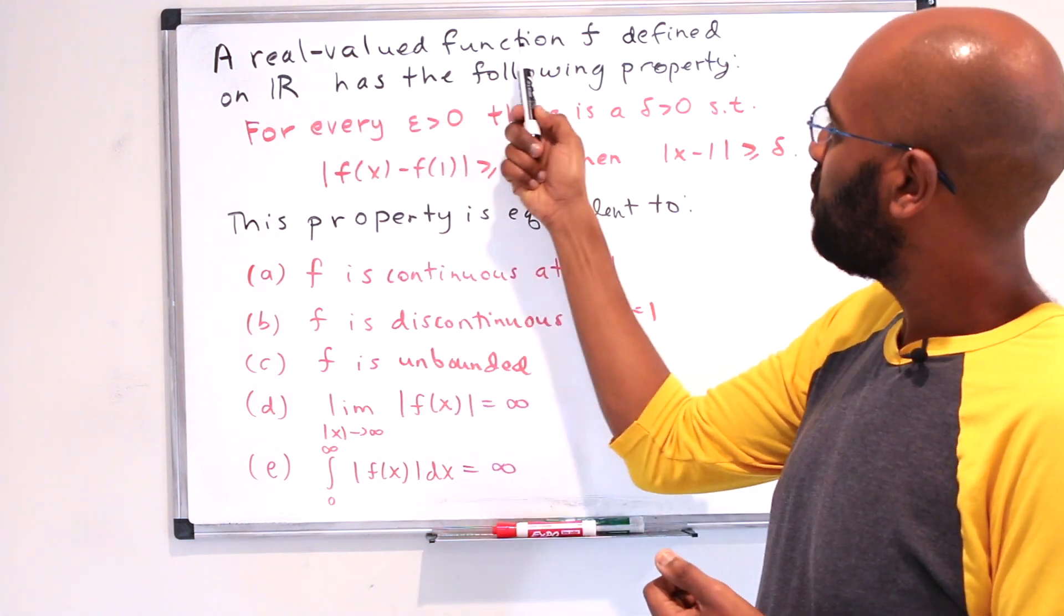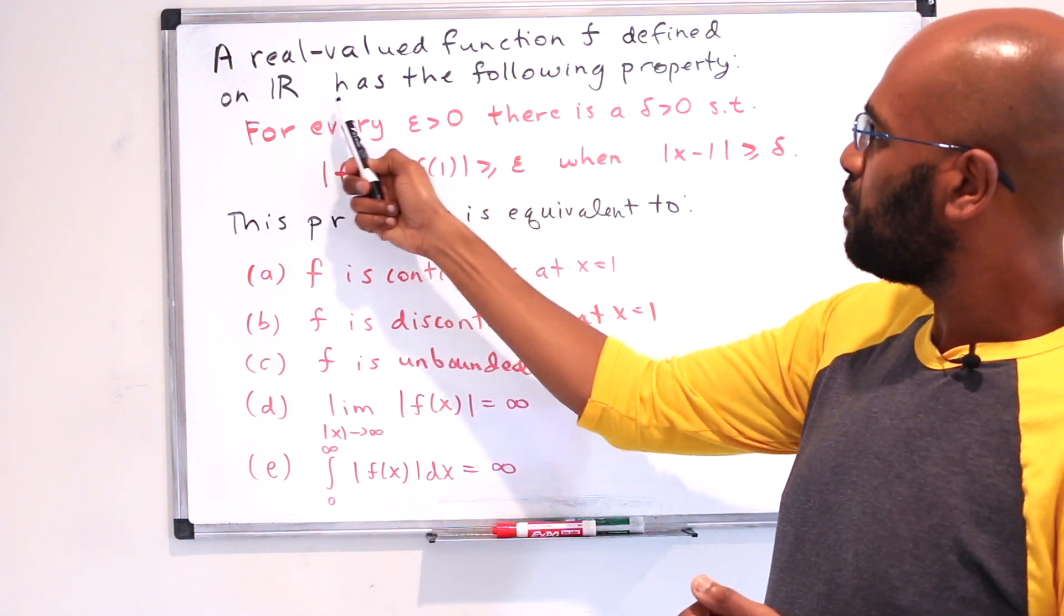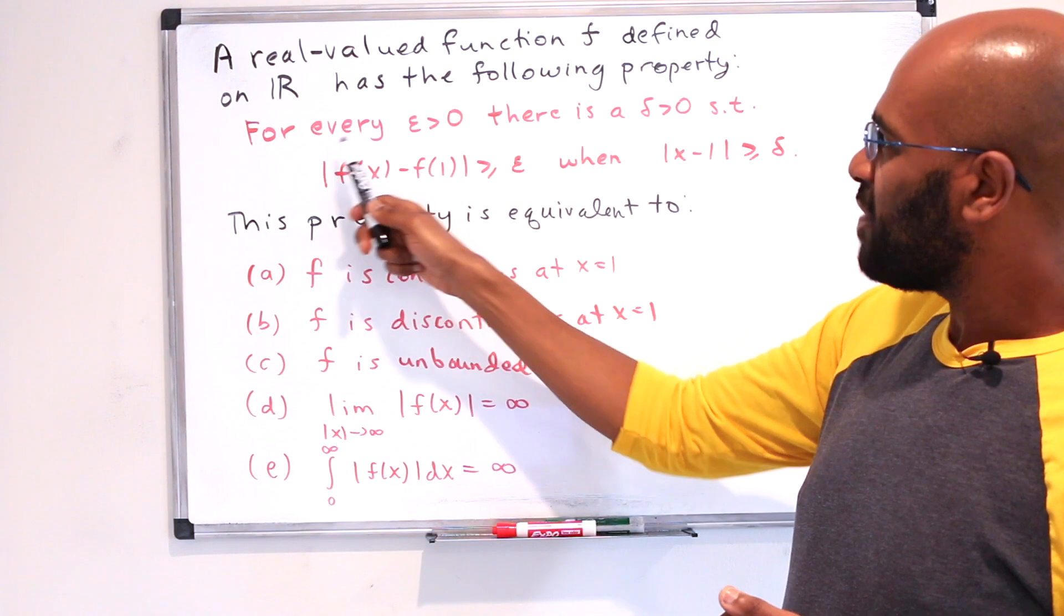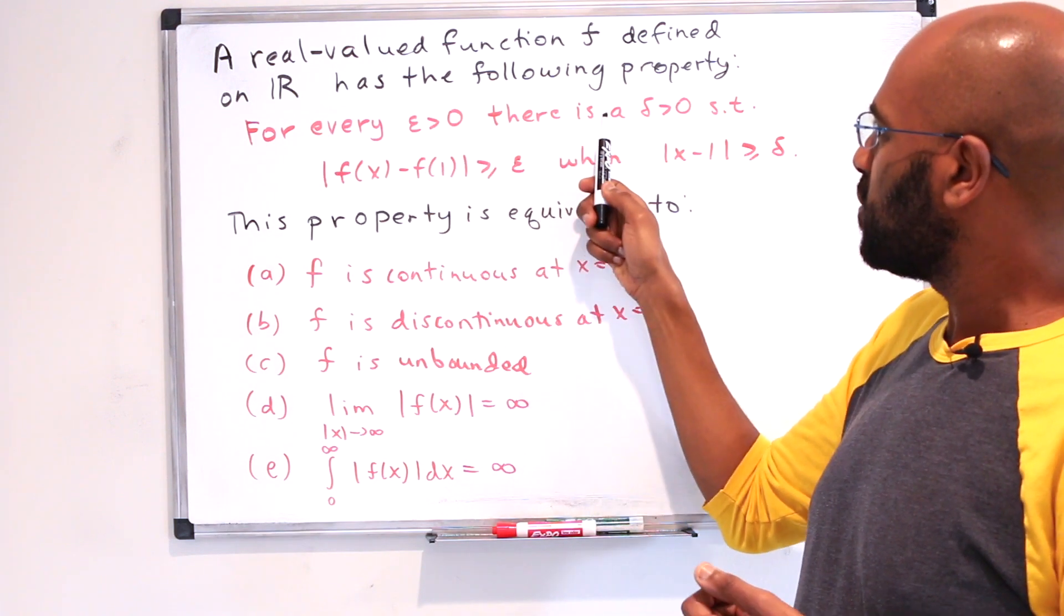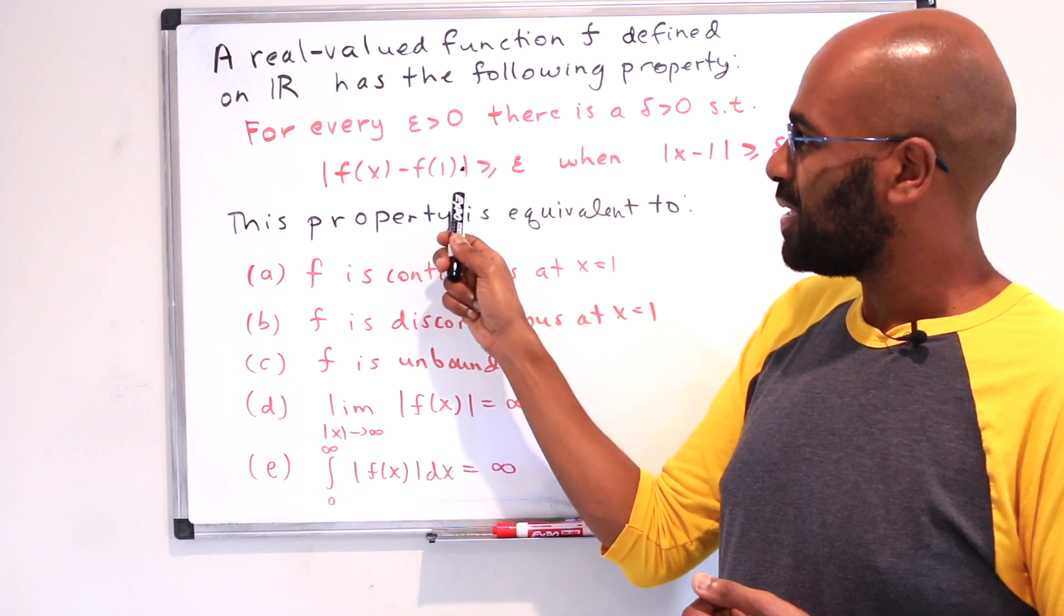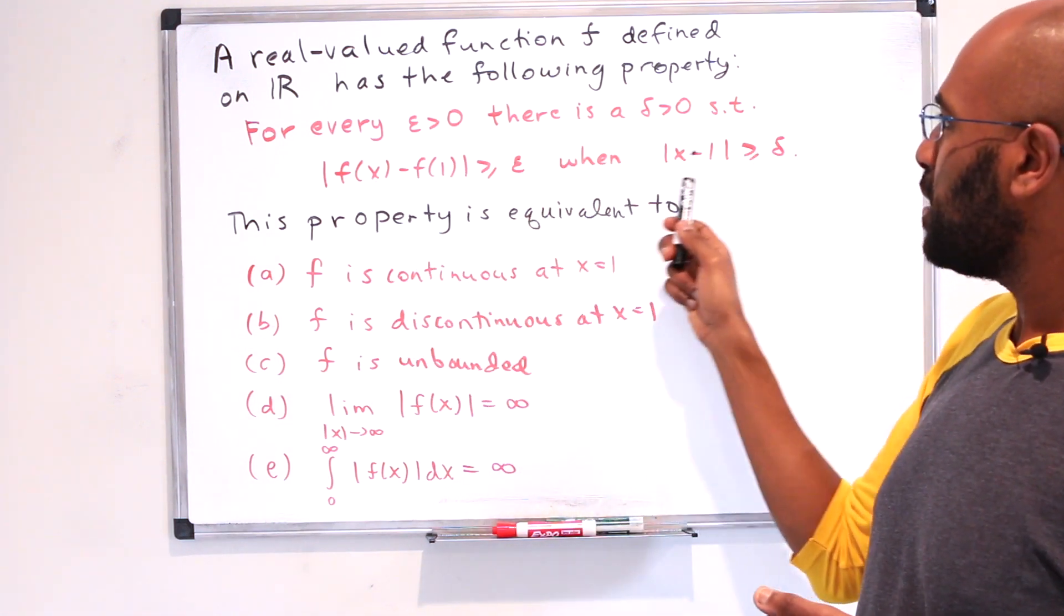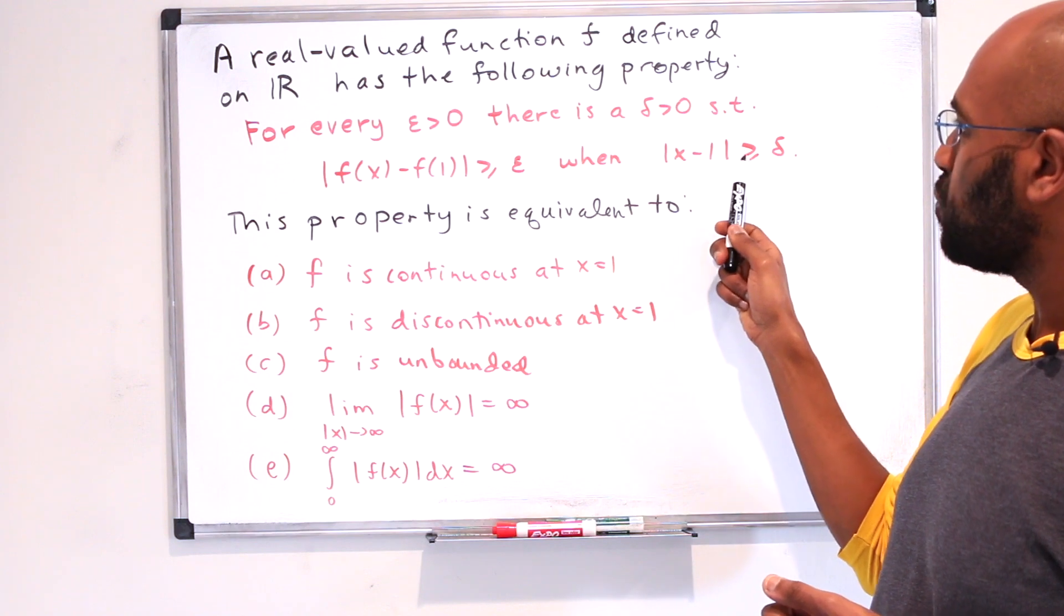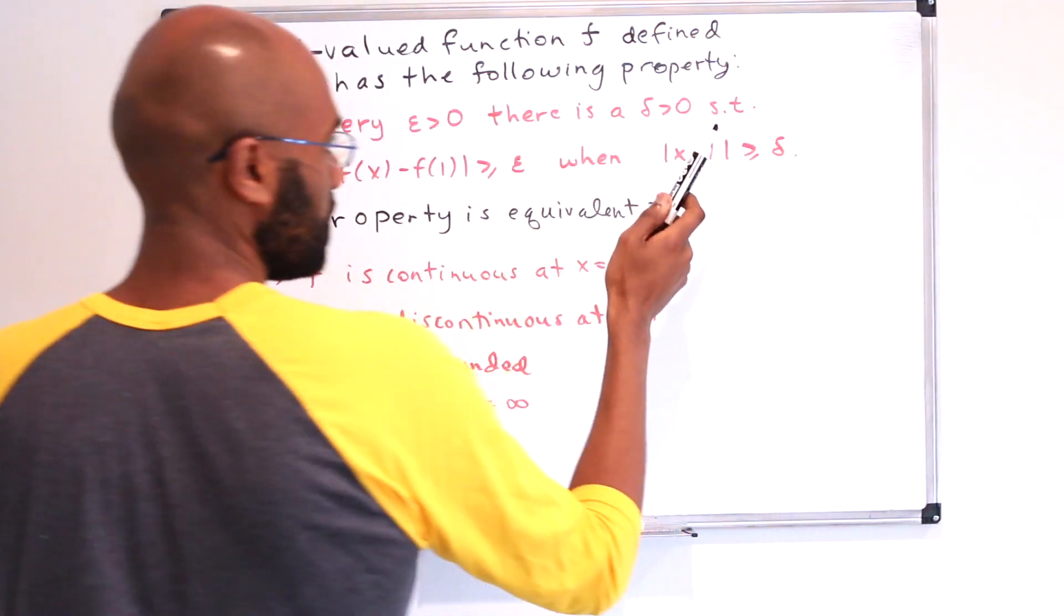So let's go ahead and read the problem. It says, a real valued function f defined on the real numbers has the following property. For every ε > 0, there's a δ > 0 such that |f(x) - f(1)| > ε when |x - 1| ≥ δ.